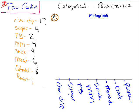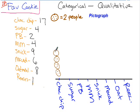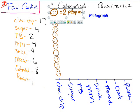Since our numbers are pretty small — the biggest we have is 17 — I'm going to let one cookie represent two people. So, doing chocolate chip first, if I have 17 people, I need to draw 8 and a half cookies. 1, 2, 3, 4, 5, 6, 7, 8, and then a half cookie to show it's not a full person. So we have 2, 4, 6, 8, 10, 12, 14, 16, 17 people — so I've got 8 and a half cookies.